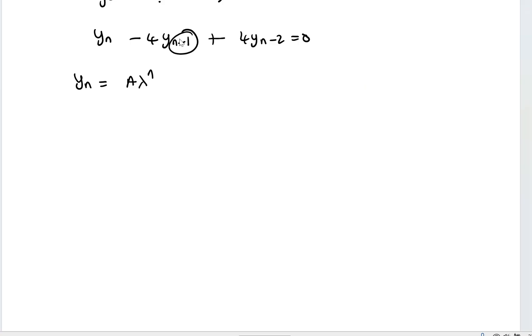For me to find y sub n minus 1, I have to replace the n with n minus 1. So I'll have A lambda^(n minus 1), which is equal to A lambda^n lambda^(-1). And for y sub n minus 2, I must replace this n with n minus 2, which reduces to A lambda^n lambda^(-2).